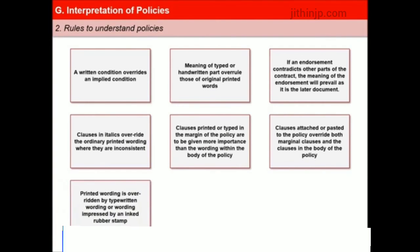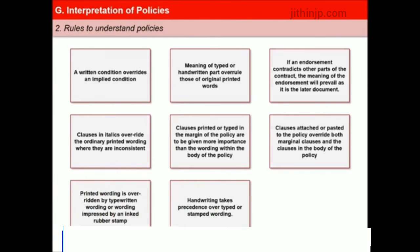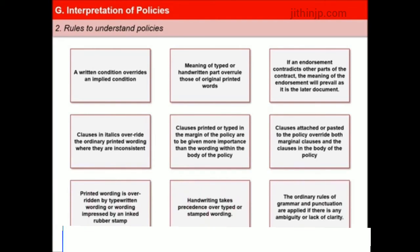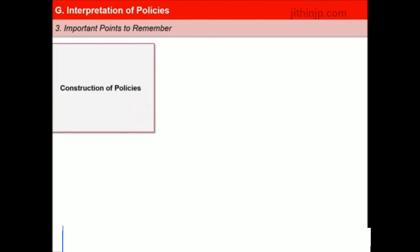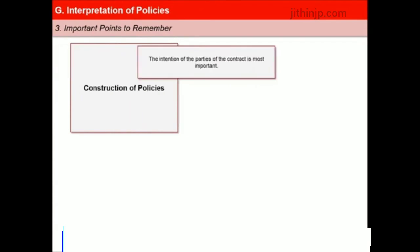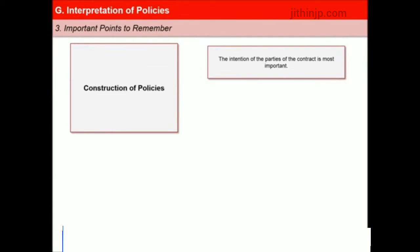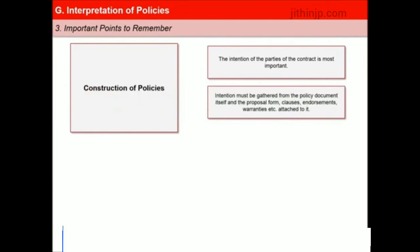Printed wording is overridden by typewritten wording or wording impressed by an inked rubber stamp. Handwriting takes precedence over typed or stamped wording. The ordinary rules of grammar and punctuation are applied if there is any ambiguity or lack of clarity. The principal rule of construction is that the intention of the parties is most important, and that intention must be gathered from the policy document itself along with the proposal form, clauses, endorsements, warranties etc. attached to it that form part of the contract.